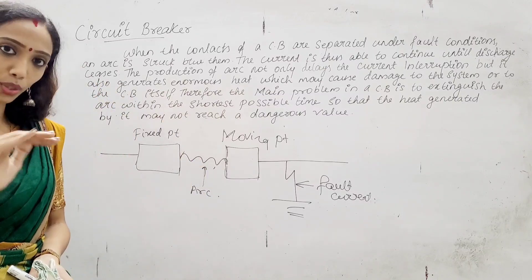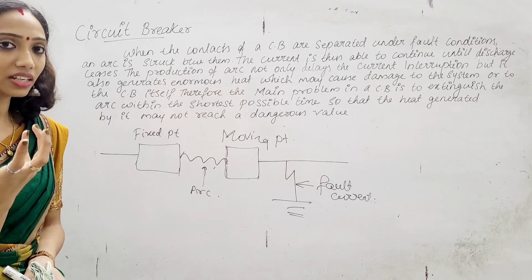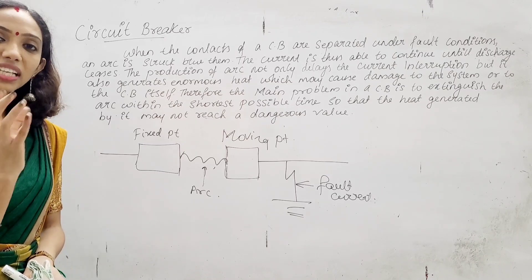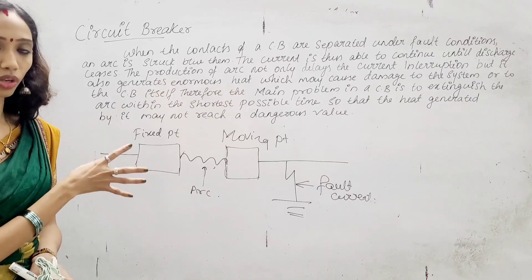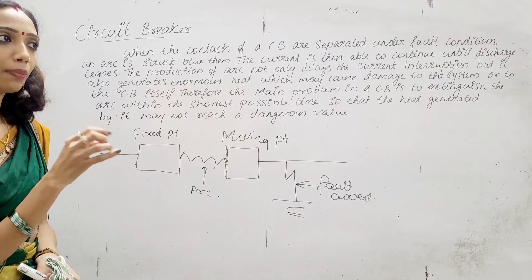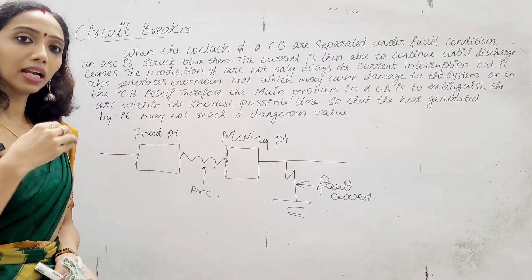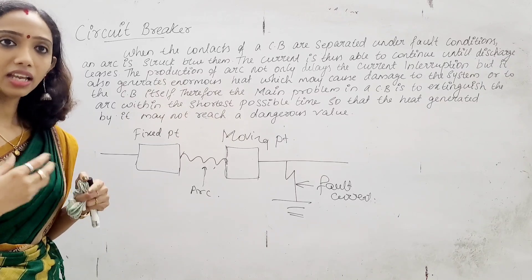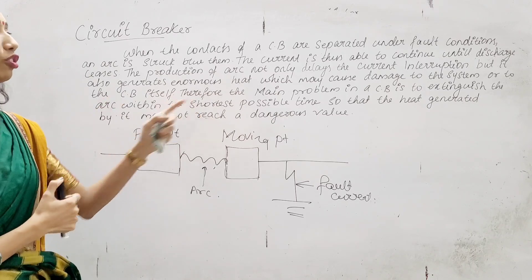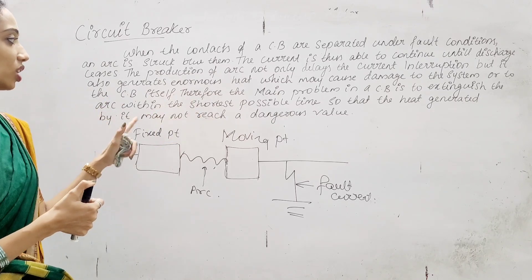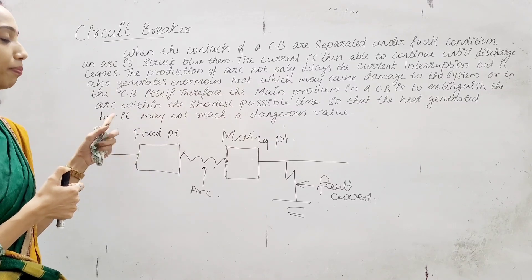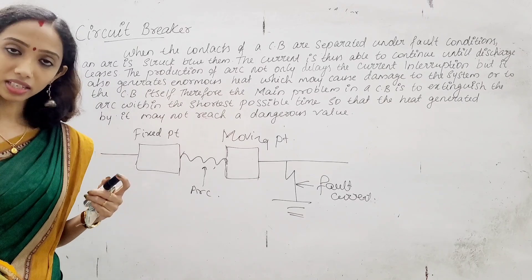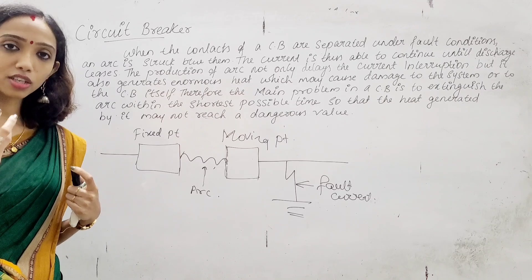The arc will be extinguished. There will be heat generation — the arc forms and that heat is generated. The heat makes damage to the system. At the end, this circuit breaker should produce no damage, so in a short span of time we will extinguish the arc.